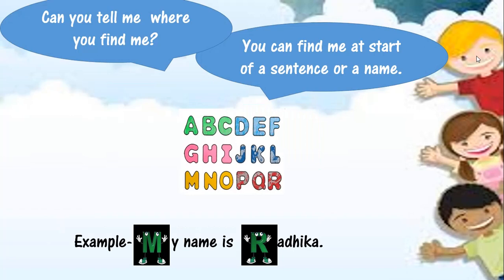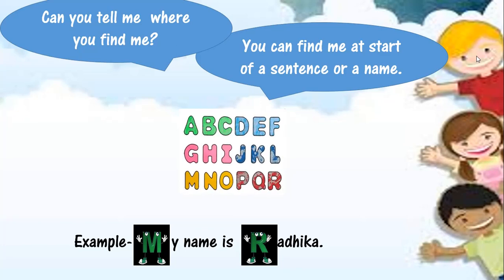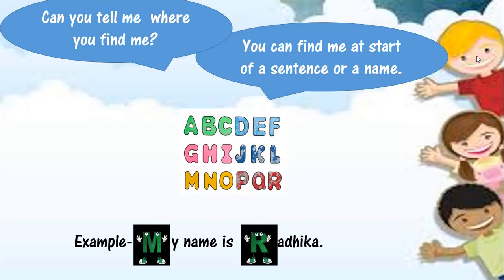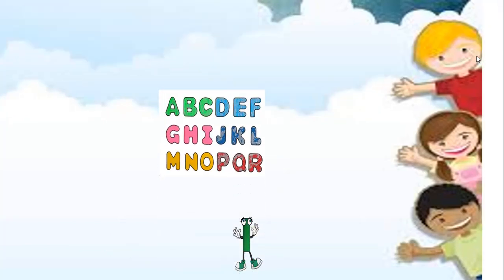I am a Capital Letter. You can find me at the start of a sentence or a name. For example: My name is Radhika. The sentence begins with 'My' and the first letter M is capital. Also, Radhika is a name and the first letter R is also a capital letter.